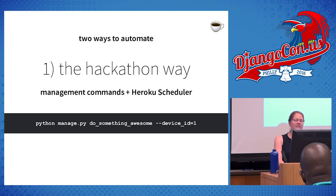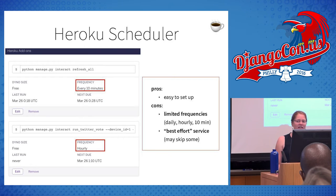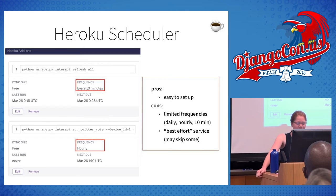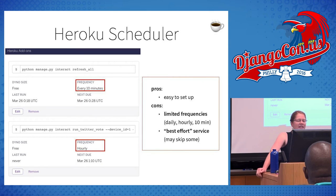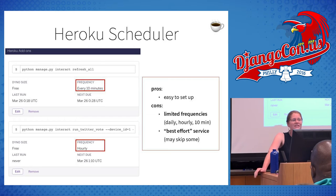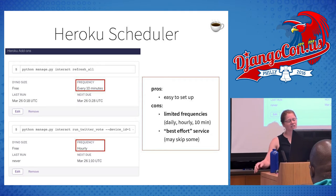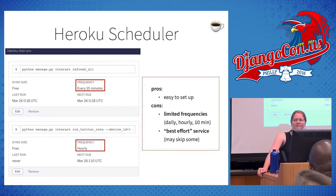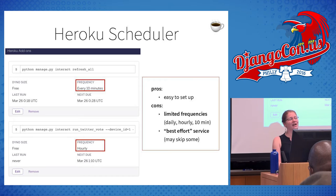To get it running on Heroku Scheduler, there's a free add-on with a cute little web interface to set up your tasks. It's pretty easy to set up, which is good. The downsides — which make it only suitable for hackathon situations — are that it has very limited frequencies: daily, hourly, or every 10 minutes. If you want every five minutes, you're out of luck. It also only operates as a best-effort service, so I've noticed it skips tasks if you let it run long enough, and then you're sad when you're missing that one data point. But it's awesome for hackathons.